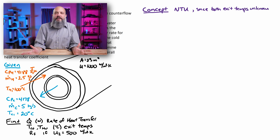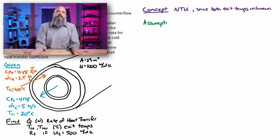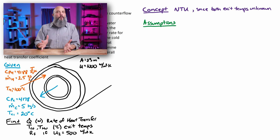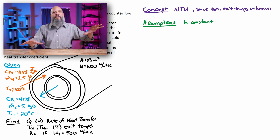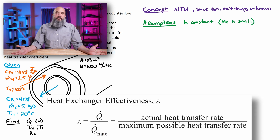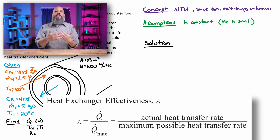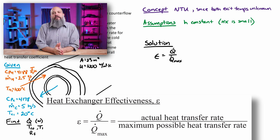Since exit temperatures are unknown, this is an NTU effectiveness method problem. I'll make a couple of assumptions — first being that H is constant. The effectiveness NTU method essentially requires the heat exchanger to be small enough that H can be constant, because H would change over the course of a really large system. I'll start with the effectiveness equation: E equals Q_dot divided by Q_dot_max.